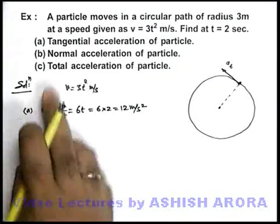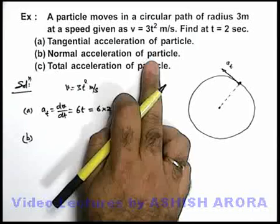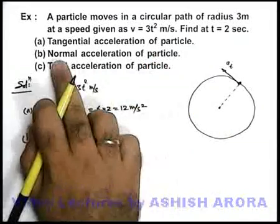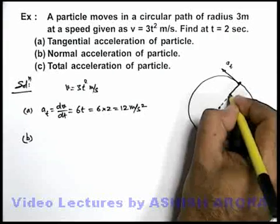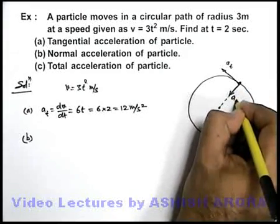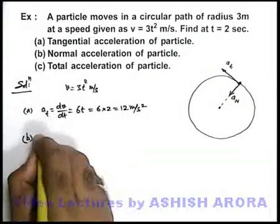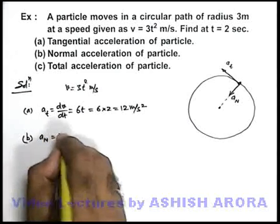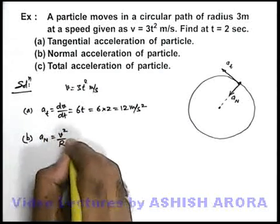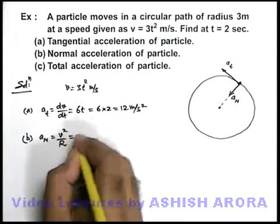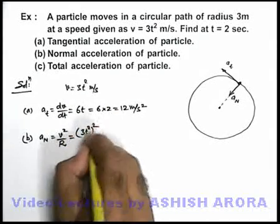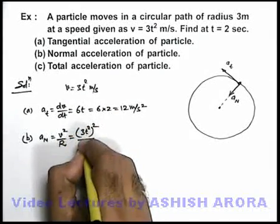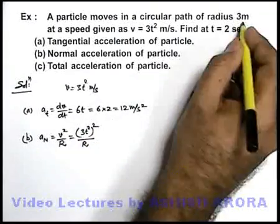In part B we are required to find the normal acceleration of particle. We know very well that normal acceleration or centripetal acceleration of particle will always act towards the centre, and the value of normal acceleration can be given as v² by r. Now in this situation, if we just put the value of v, it is 3t² whole square divided by r, and the value of r is 3 meters in our case.